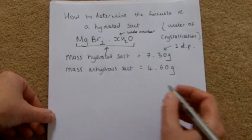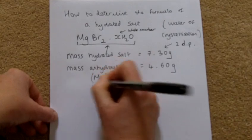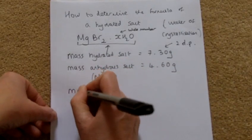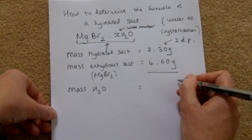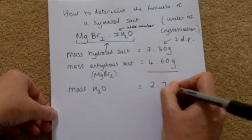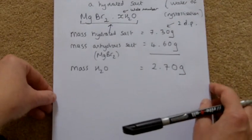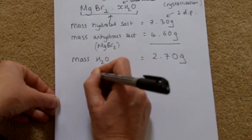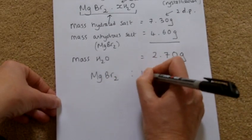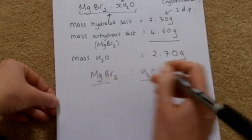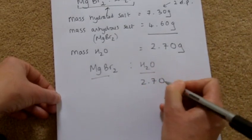Remember: the anhydrous salt has no water. The mass of water is found by subtracting the two masses. Taking those two numbers away gives us 2.70 grams as the mass of water. The method we use to calculate the formula is the empirical formula method. We take two columns — we're trying to find the molar ratio of water to magnesium bromide. First, write the mass underneath: the mass of water is 2.70 grams.